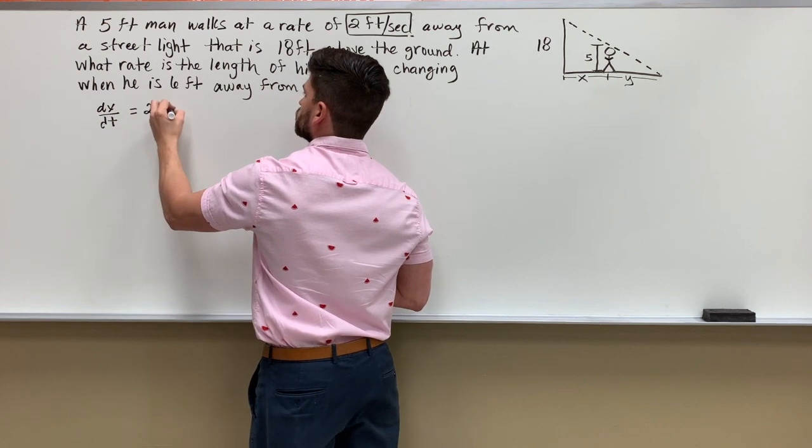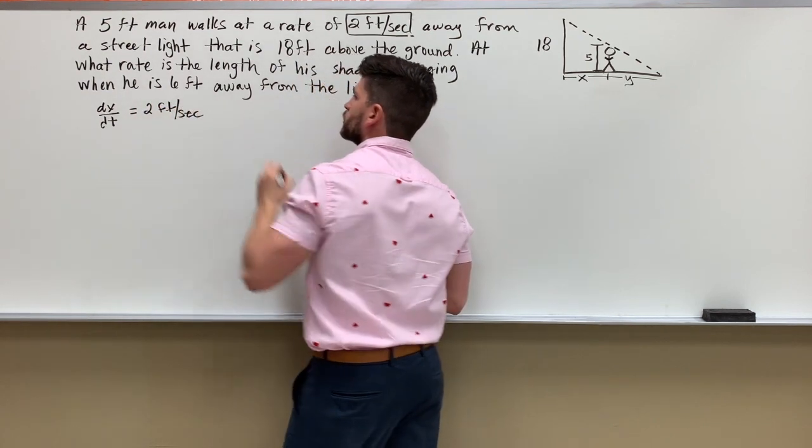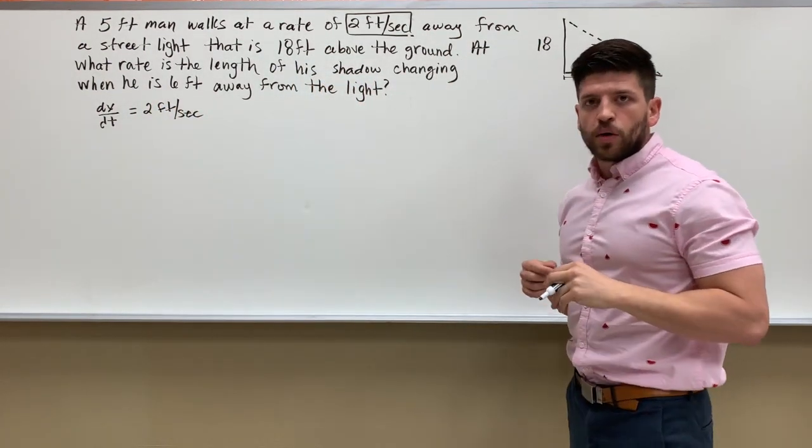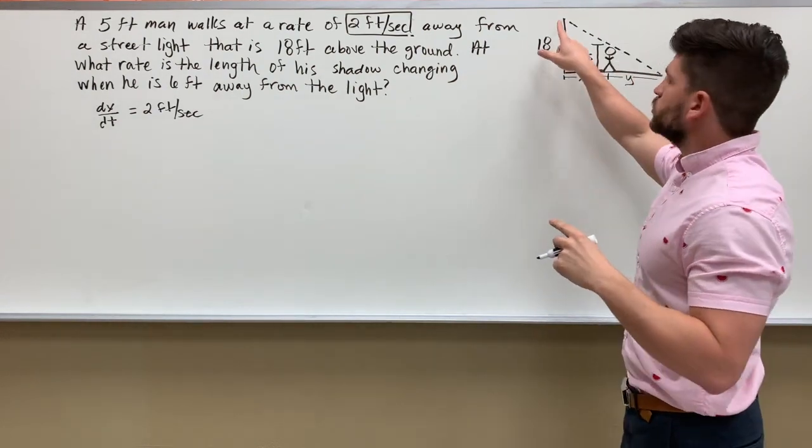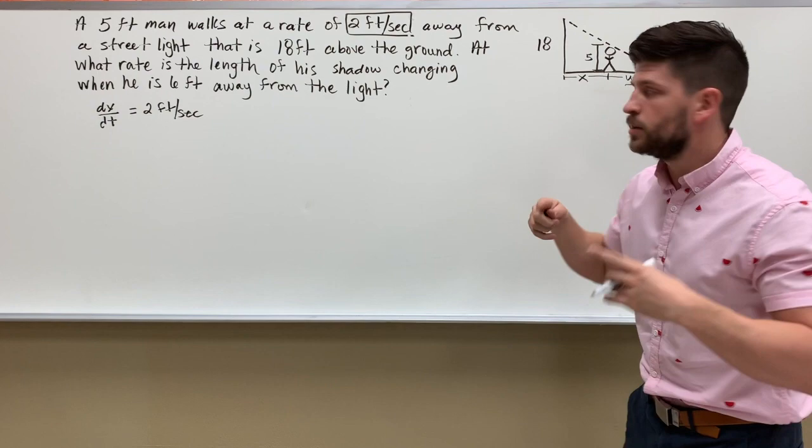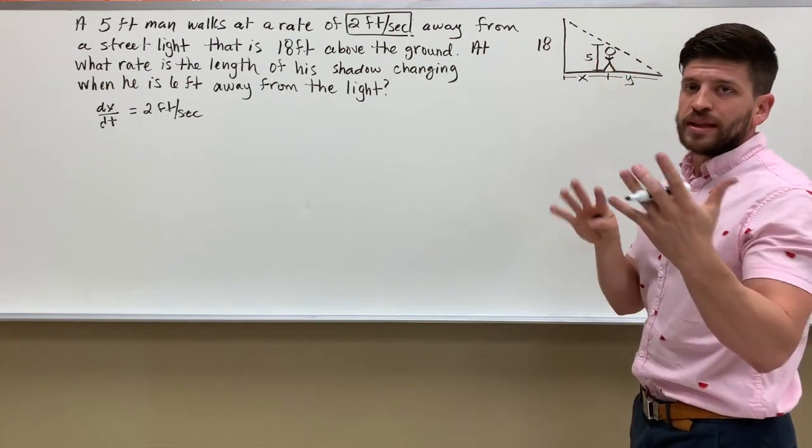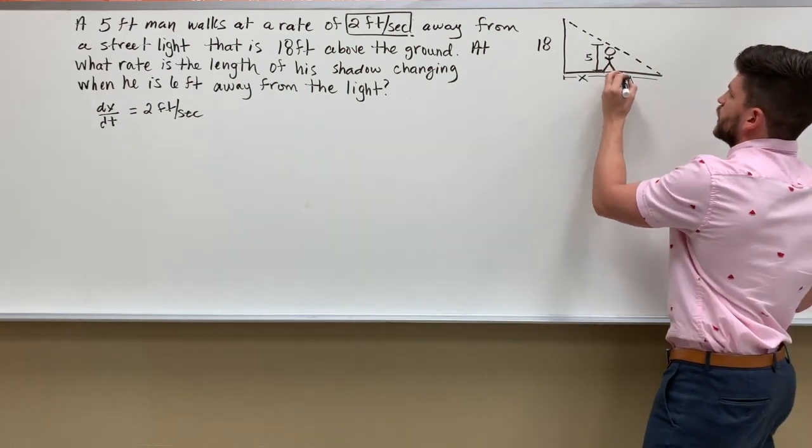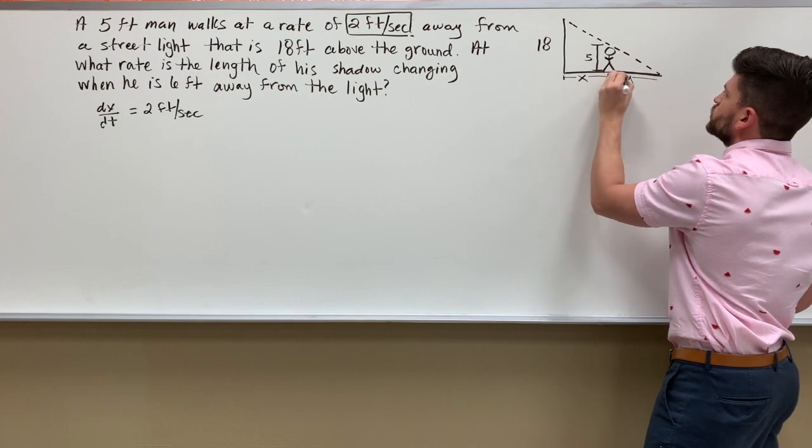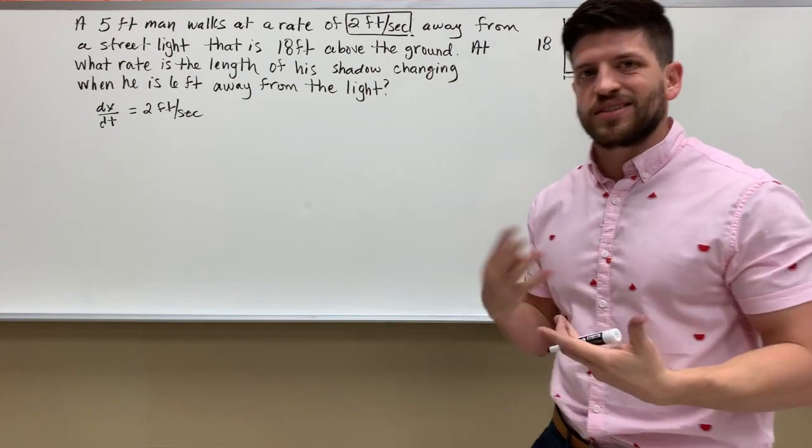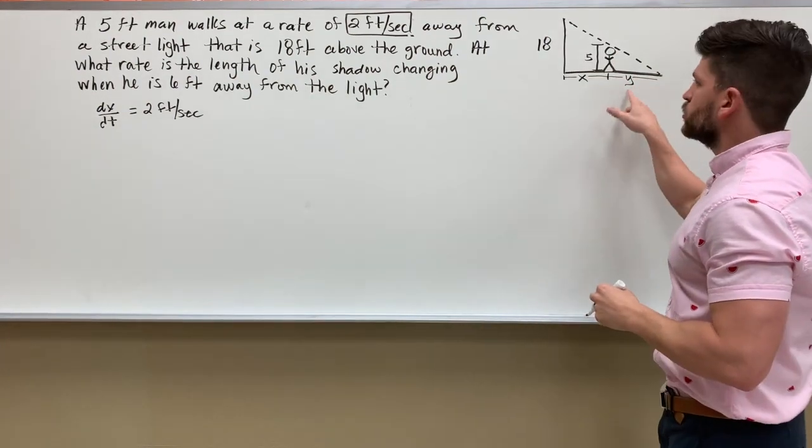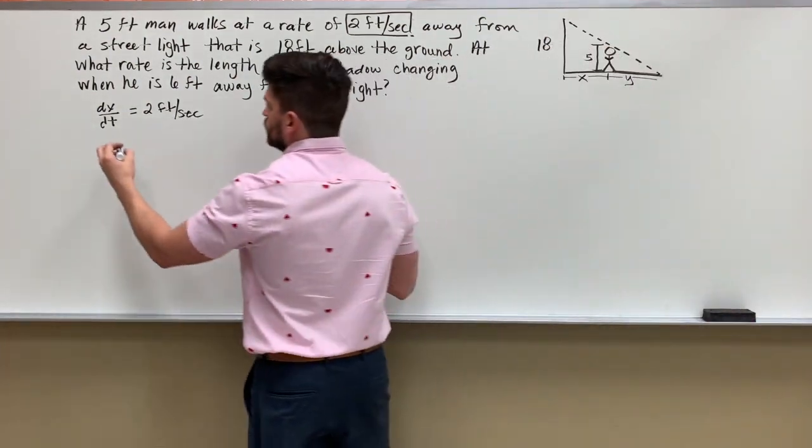Now I want to know at what rate his shadow is changing. Let's think about this: here's the street light, it's shining on the man, so when the light shines on him he's going to cast a shadow. So y is representing his shadow - sometimes problems will label it s instead of y for shadow. So what I want to find is dy/dt.